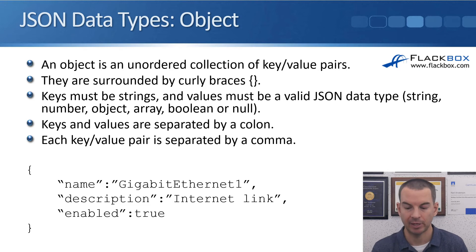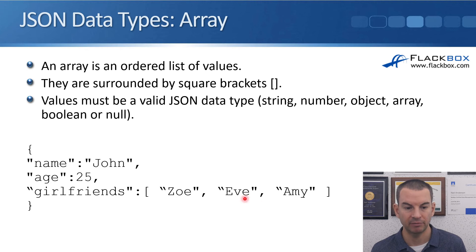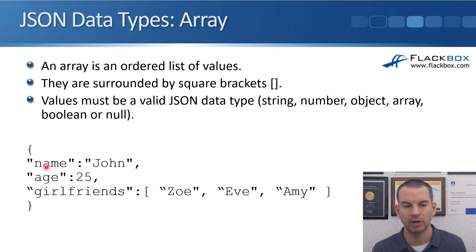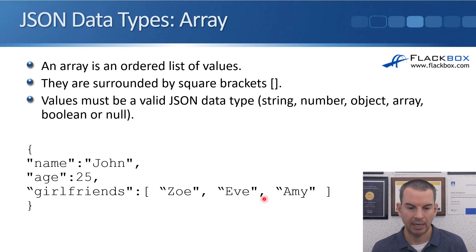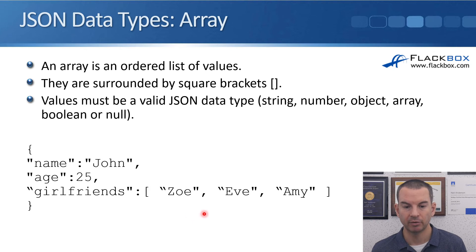Here's an example of an array nested inside an object. We've got the object with curly brackets; the key-value pairs show name is 'John' and age is 25. Then the key 'girlfriends' has an array as its value, shown with square brackets, listing John's girlfriends: Zoe, Eve, and Amy. Each key-value pair in the object has a comma after it, apart from the last one — same in the array, values separated by commas but no comma after the last one.